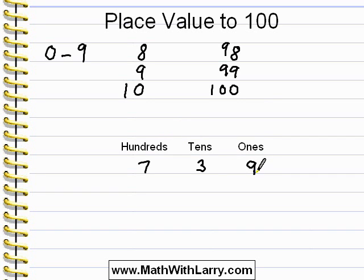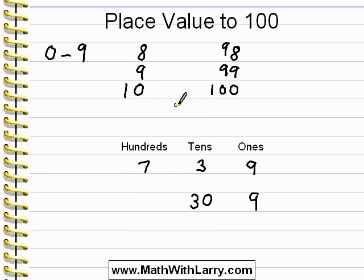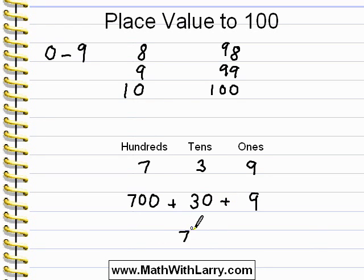The number 9 is in the ones place, which means this number has 9 ones, and I can just write that as 9. There's a 3 in the tens place, which means we have 3 tens, and 3 tens has a value of 30. And we have 7 in the hundreds column, meaning we have 7 hundreds, or 700. So what this number really is, is 700 plus 30 plus 9, which we just say as 739.